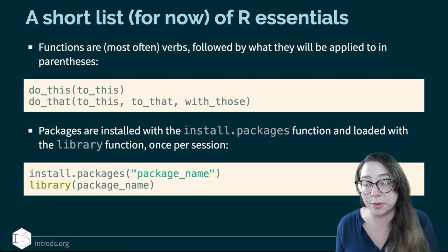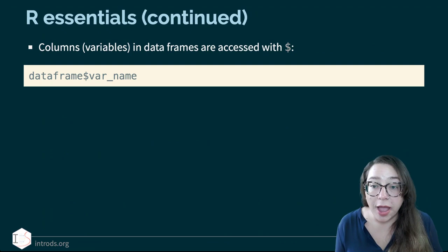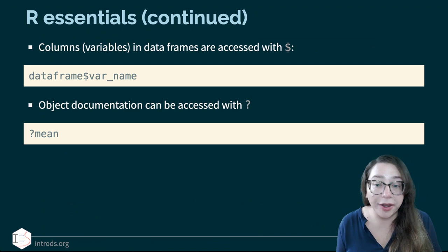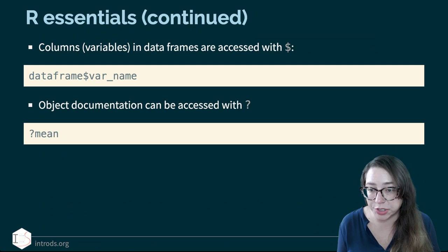Then every time you're in a new R session you'll need to load those packages explicitly with the library function, as we did earlier. When you have a data frame and then a variable in that data frame, we use the dollar sign operator between those two to access the particular variable. Object documentation can be accessed with the question mark or using the help menu in RStudio.